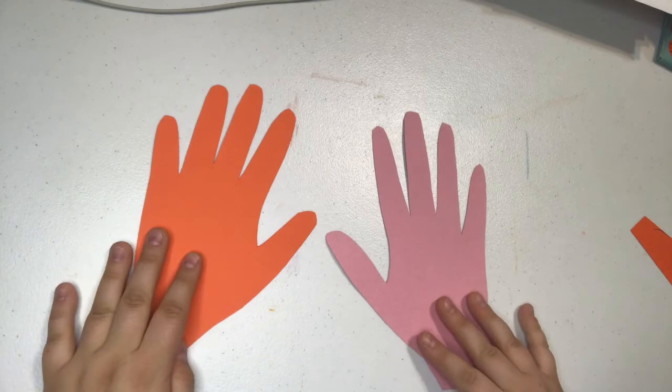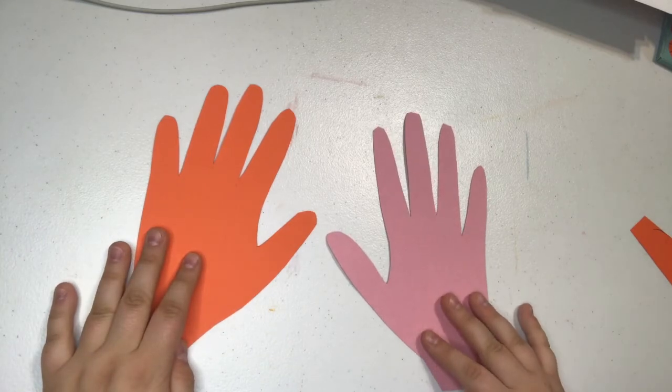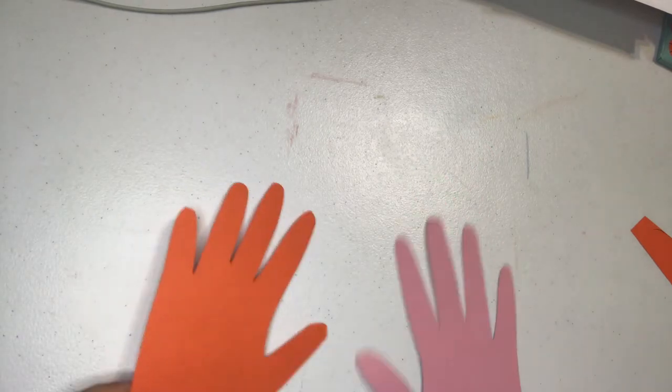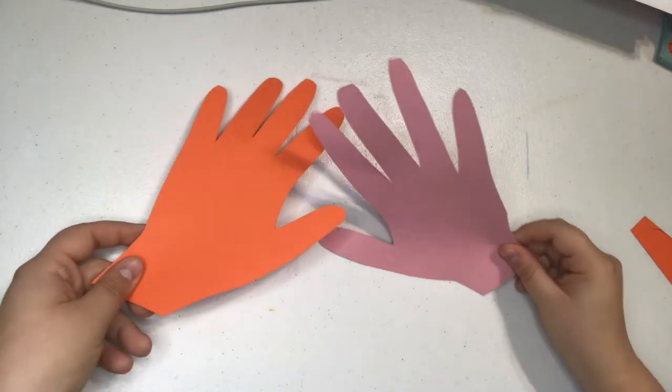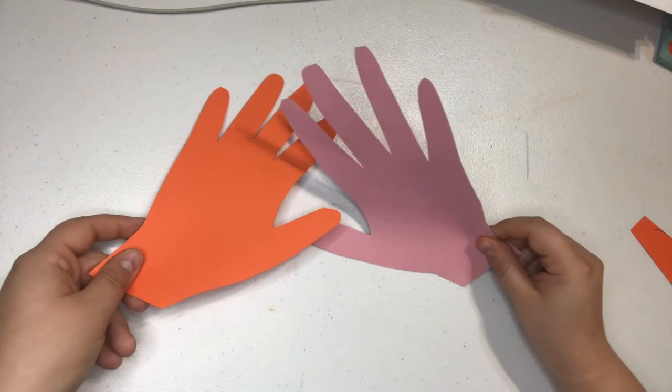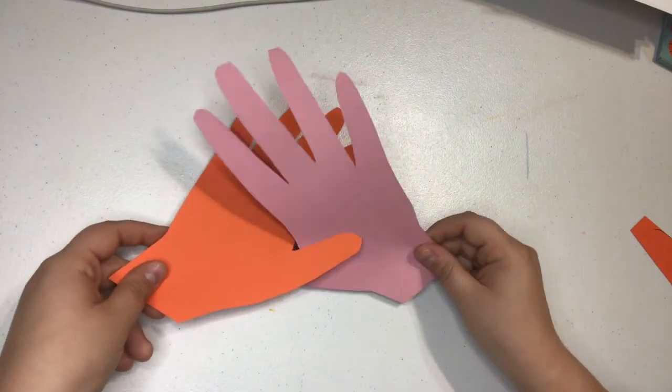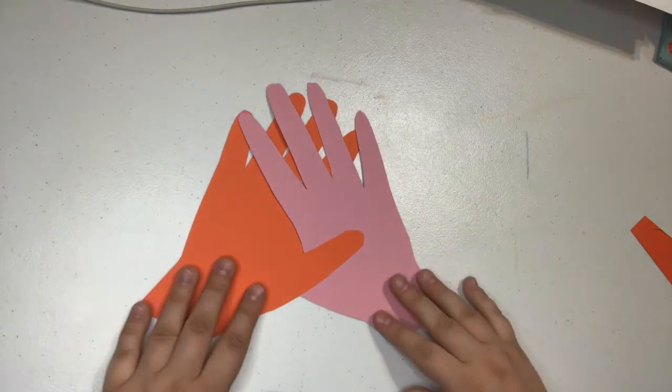Now that we have both of our hands cut out, we are going to weave them together. So take your two hands and put them together using that little space in between your thumb and your hand.